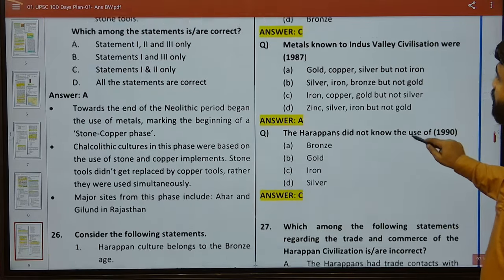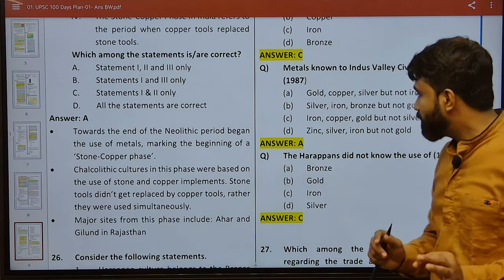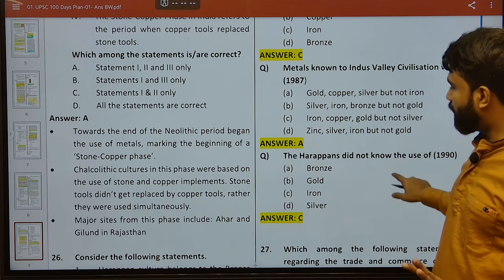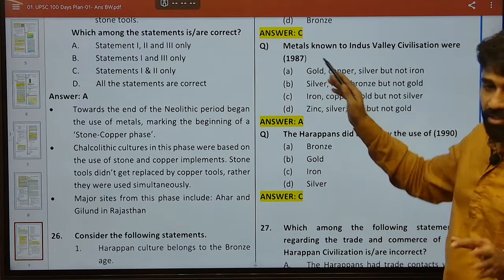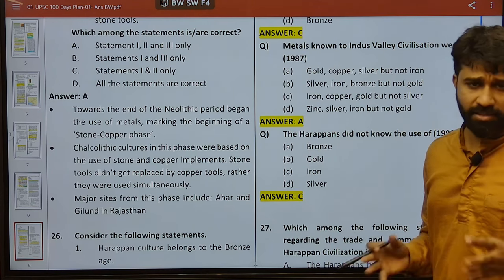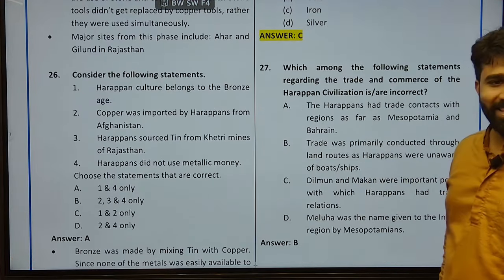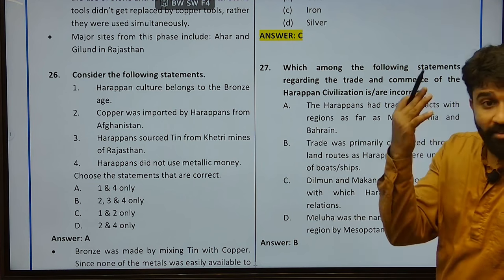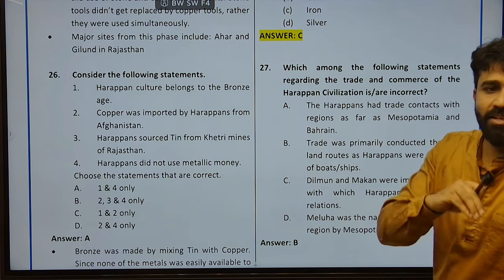Metals known to Harappan people — UPSC confirmed in 1987 that iron was not known to IVC people. Harappans did not know the use of iron — they have clearly told this several times, in 1990 and 1987. After that, various archaeologists might have found different things regarding horse or iron — in Surkajandhar horse bones were found. But with respect to UPSC, it is very clear that iron was not found among Harappans.